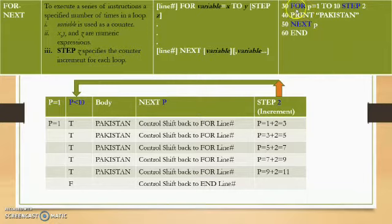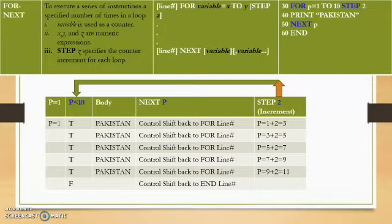This can be easily understood with an example. The FOR statement starts at line number 30, where p is the loop variable initialized with one and going up to 10. The STEP statement increments p by two each time, meaning every time p will be incremented by two. It can also be incremented by one, three, or any expression.